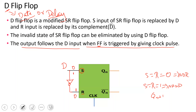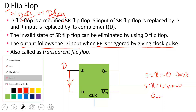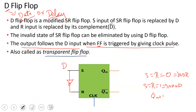So if D is 0, the next state is 0. When the clock pulse triggers the flip-flop, the output follows the input — that is why this flip-flop is also called a transparent flip-flop.